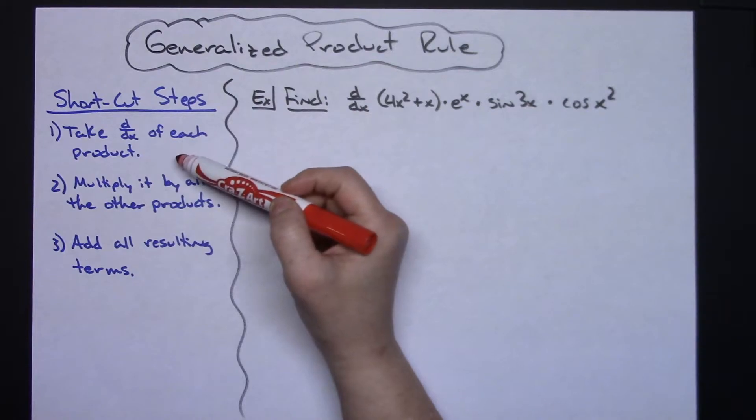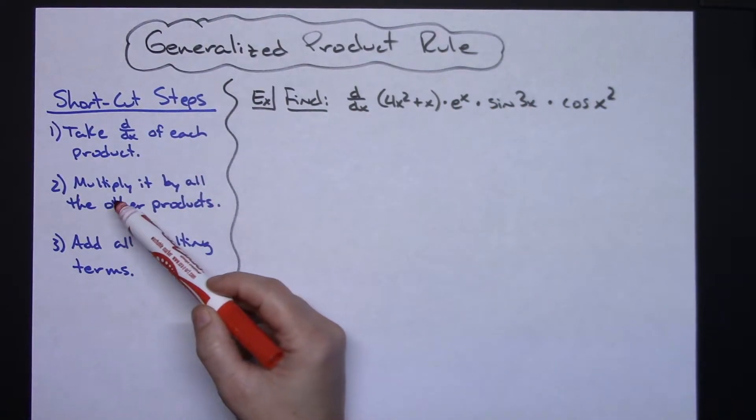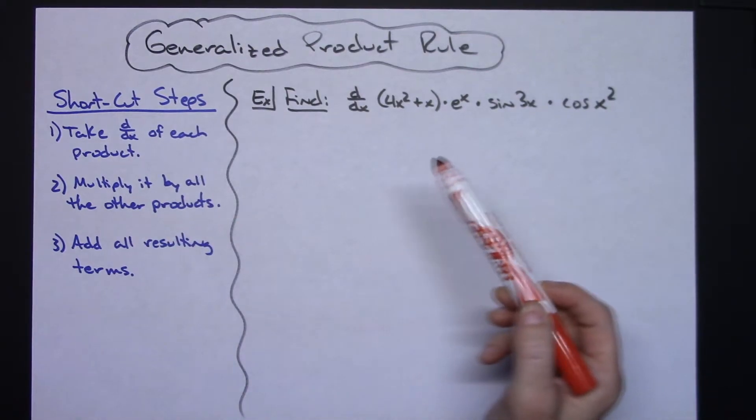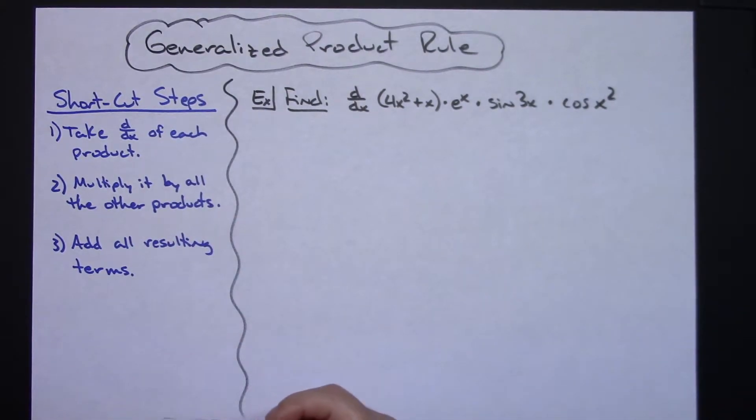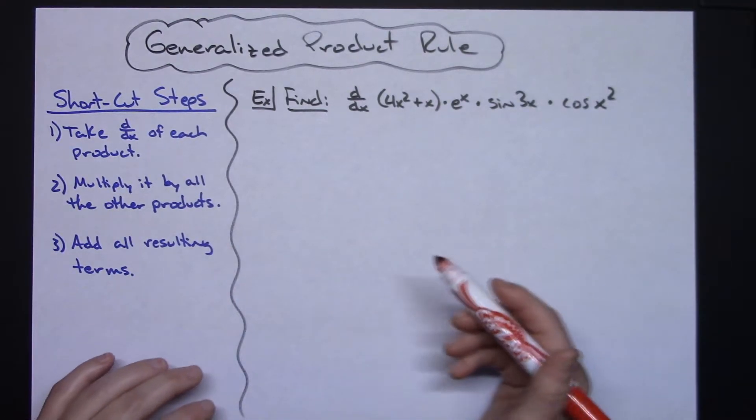So some shortcut tricks here is we're going to take the derivative of each of the products, we'll take the derivative of each one of them individually. We'll multiply it by all the other products that are remaining and then we're going to add our resulting terms. And usually if you kind of do this in an organized logical little box it's a lot quicker than trying to just go left to right across your piece of paper.